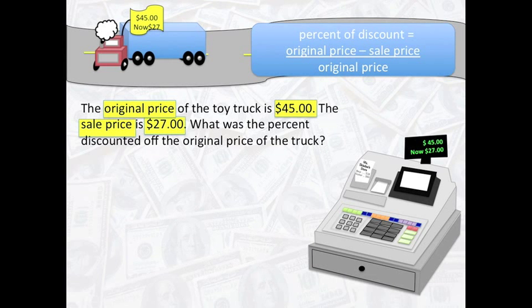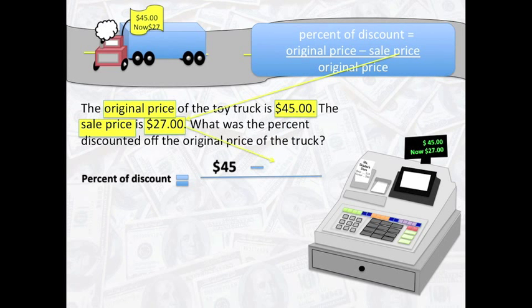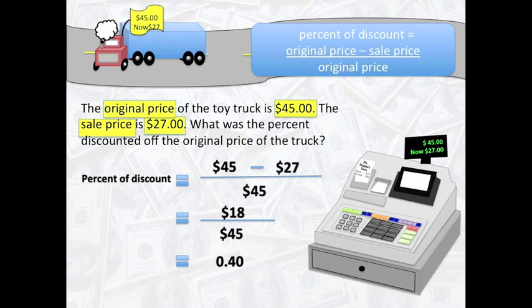So, the percent of discount is equal to the original price, $45, minus the sale price, $27. The difference is all over the original price, $45. $45 minus $27 equals $18. $18 divided by $45 equals 4 tenths.